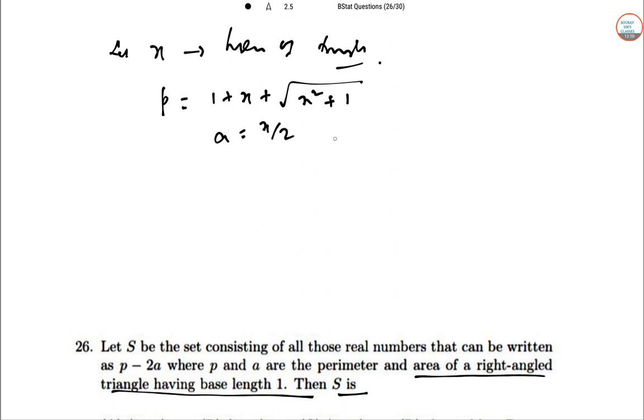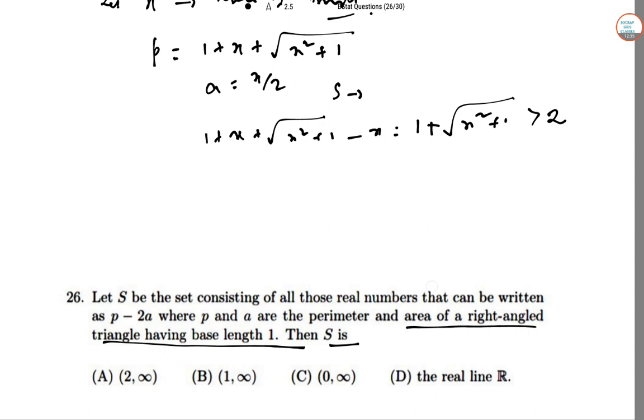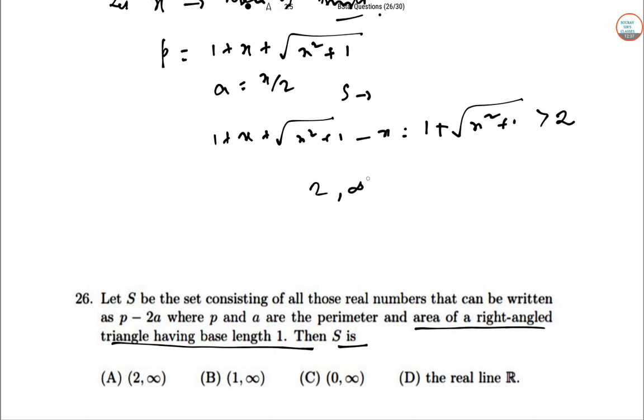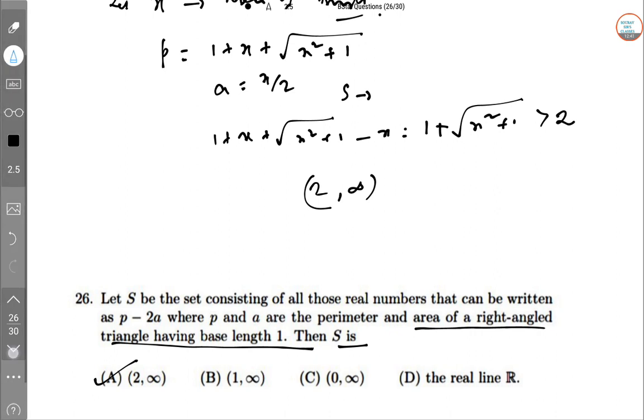A = x/2. So S is the set of all real numbers in the form 1 + x + √(x² + 1), that is 1 + √(x² + 1). This has to be greater than 2. Seeing this greater than 2 means this goes to infinity. So S is (2, ∞).